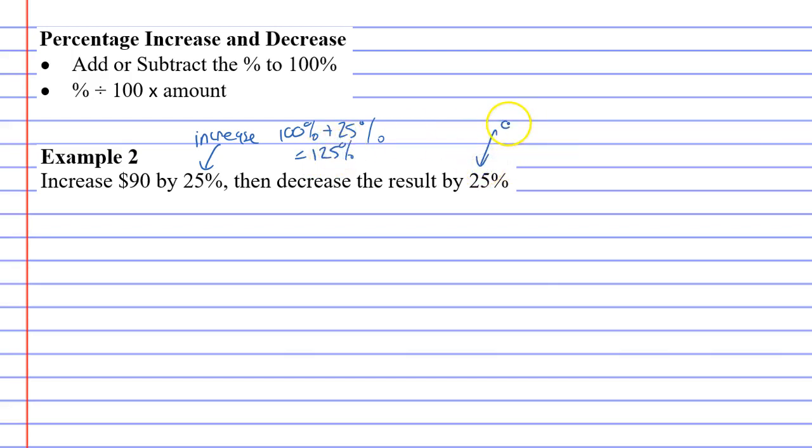And it also wants you to decrease by 25%, which means this time we're going to subtract the 25%, which gives us 75%. So our two percentages, the increase is 125%, and our decrease is 75%.